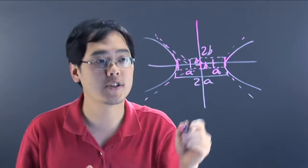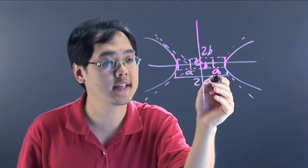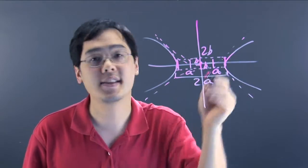So, so far a box is going to have the center, the transverse axis, the conjugate axis, and the asymptotes.